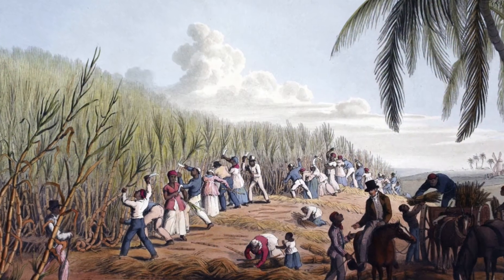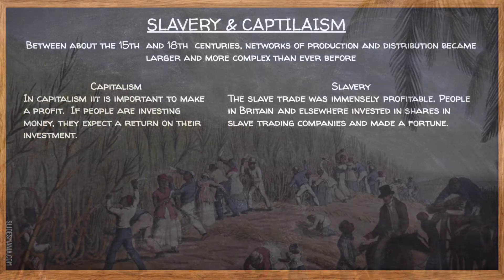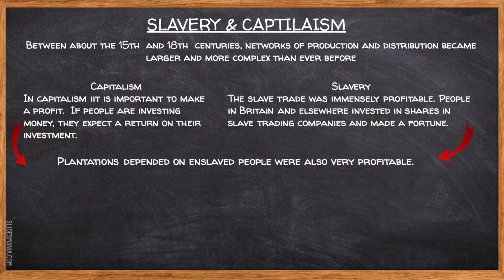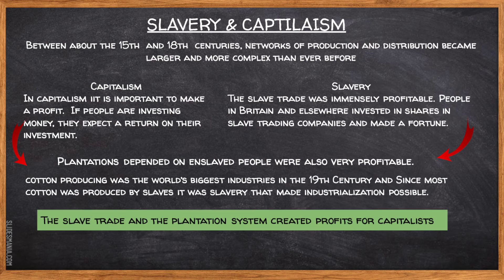Plantation slavery and capitalism rose in the same period. We know that capitalism exists to make a profit, and people are investing money and expecting a return on their investment. Slavery was immensely profitable — people in Britain and elsewhere around the world invested in shares of slave trading companies and made a fortune. Plantations that depended on enslaved people were also incredibly profitable. Cotton producing was the world's biggest growing industry in the 19th century, and since most cotton was produced by slaves, it was slavery that made industrialization possible.